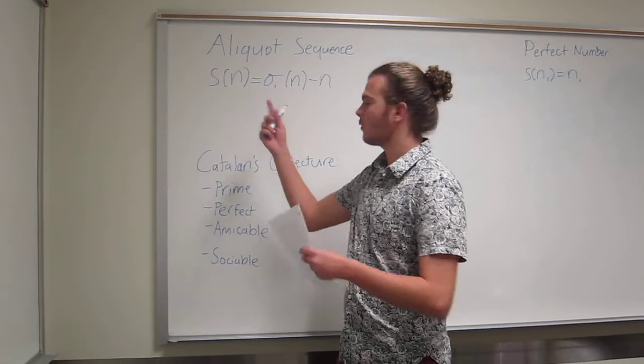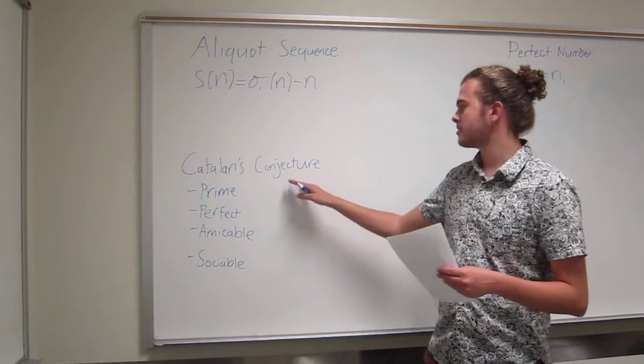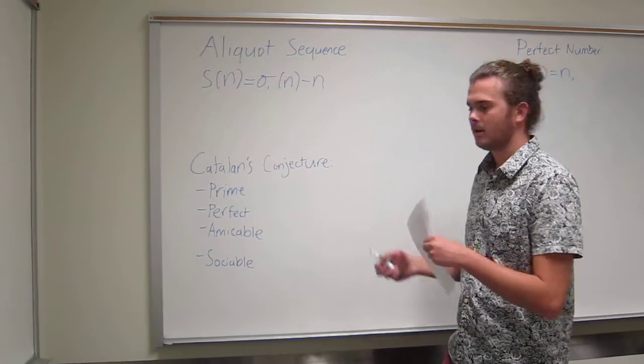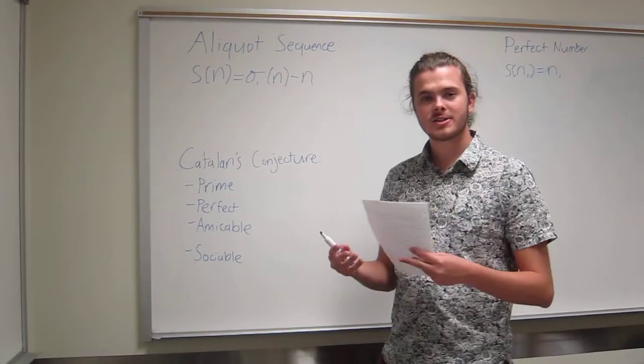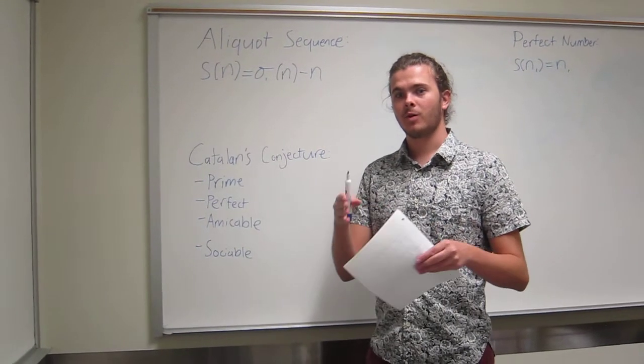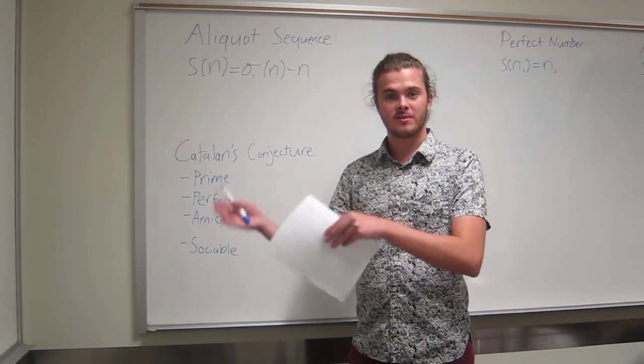Today I'm going to be talking about aliquot sequences and its relationship to Catalan's conjecture. The first question I want to answer is what is an aliquot sequence? An aliquot sequence is a sequence where any term is equivalent to the sum of the proper divisors of the previous term.